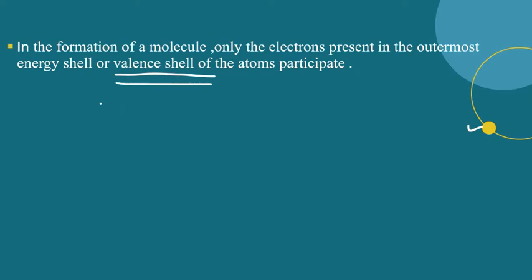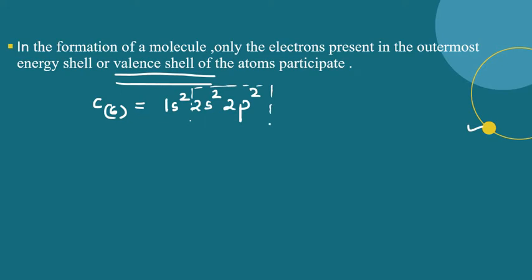How do we represent the valence shell? For example, let us take the case of carbon, atomic number 6. Its configuration is 1s2, 2s2, 2p2. So the valence electrons are in the outermost second shell. How many valence electrons are there? Four valence electrons.